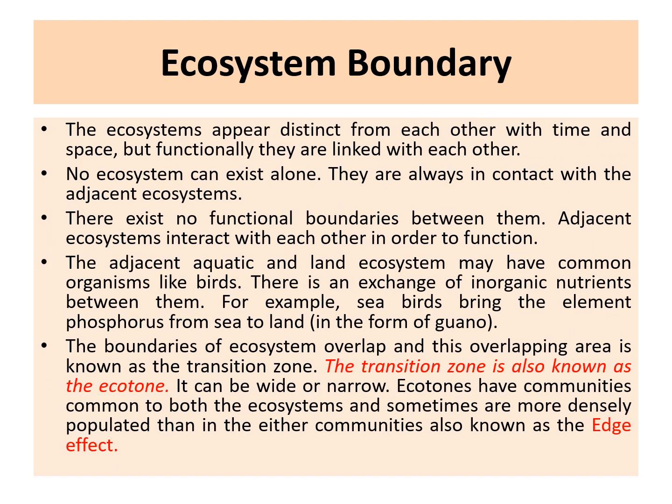A very important concept is the ecosystem boundary. Ecosystems appear to be distinct from each other in time and space, but functionally each ecosystem is linked with the others — no ecosystem can exist alone. There are always contacts between adjacent ecosystems, with no strict functional boundaries because adjacent ecosystems are always interacting. Adjacent aquatic and land ecosystems may have many common organisms, such as birds, and there is a constant exchange of inorganic nutrients — for example, sea birds bring phosphorus from the sea to land in the form of bird droppings, also known as guano, which is part of the phosphorus cycle.